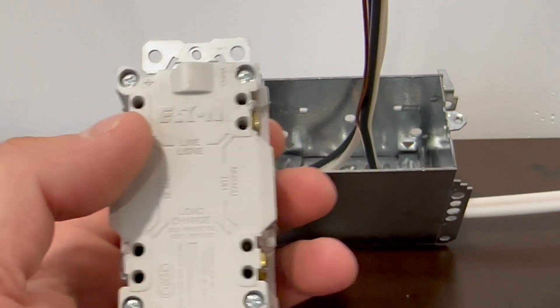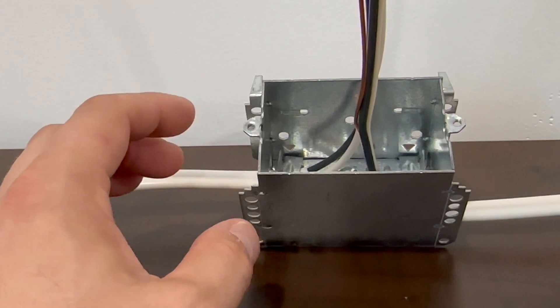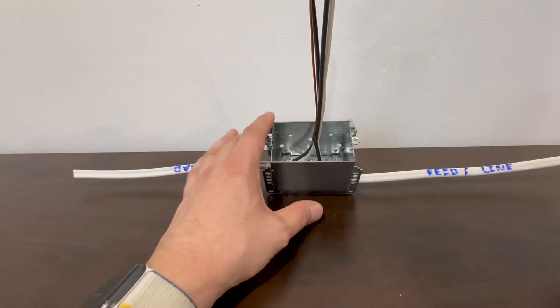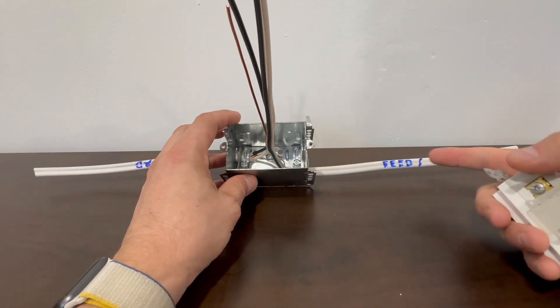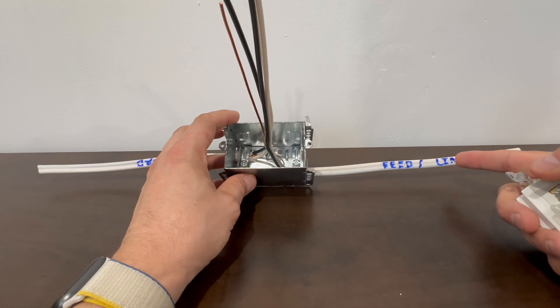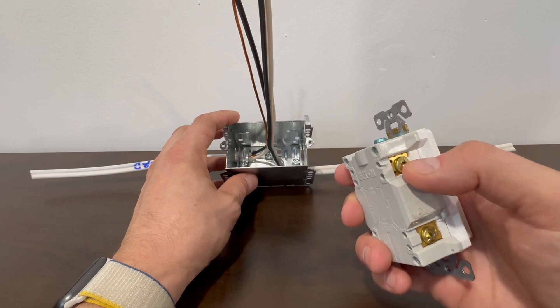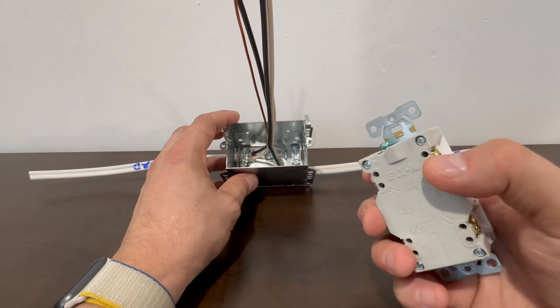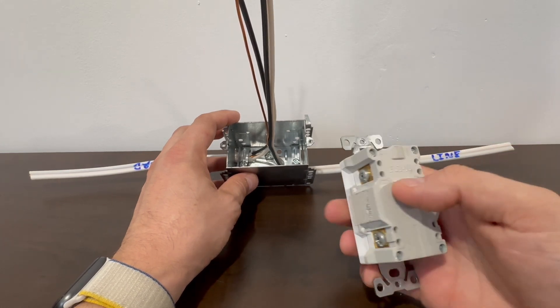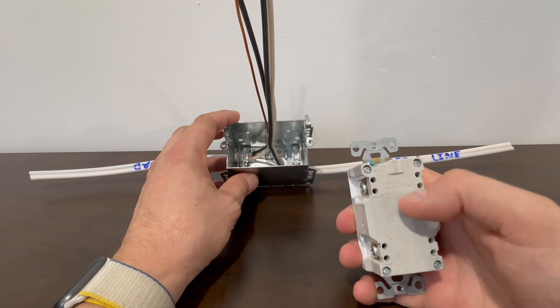Again, what that means is when you're looking at your receptacle and how you're going to tie it in, your feed is on your line side. That would go on the line side of the breaker up here. So there would be your brass screw. That would be where your black wire goes of your feed. There's your silver screw. That would be where the white wire goes of the feed.